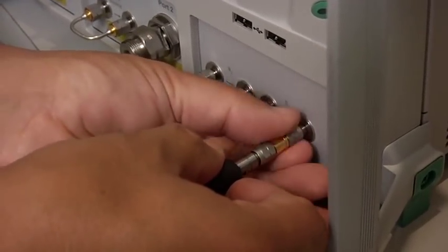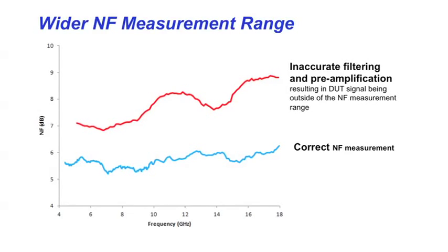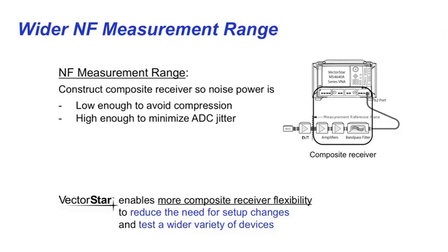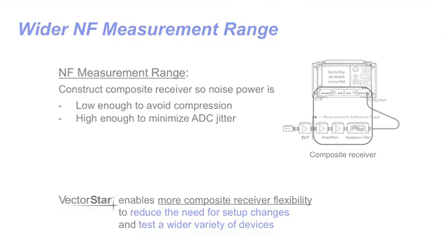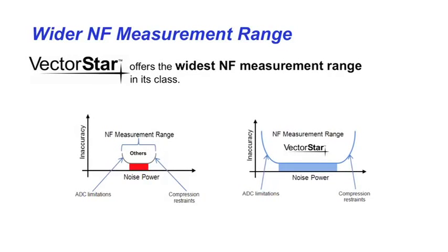If too little amplification is applied to the composite receiver, there may be too much jitter from the instrument's A to D converter. If too much amplification is applied, resultant power levels can cause compression and impact the measurements. Selecting a VNA that provides a wide noise figure measurement range enables greater composite receiver configuration flexibility, simplifying setup and offering the ability to test a wider variety of devices. The Anritsu VectorStar family offers the widest noise figure measurement range in its class.